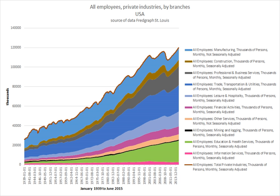Ending employment. Usually, either an employee or employer may end the relationship at any time, often subject to a certain notice period. This is referred to as at-will employment. The contract between the two parties specifies the responsibilities of each when ending the relationship and may include requirements such as notice periods, severance pay, and security measures.